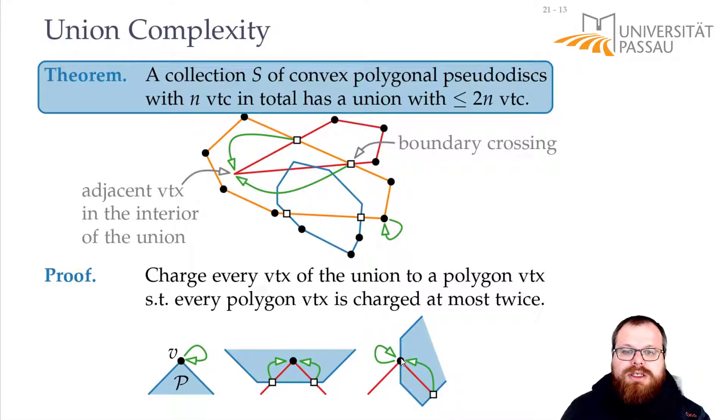So again, it only gets two charges. Because now we don't have two boundary crossings that we have to charge to someone else, because the first one can charge to itself.